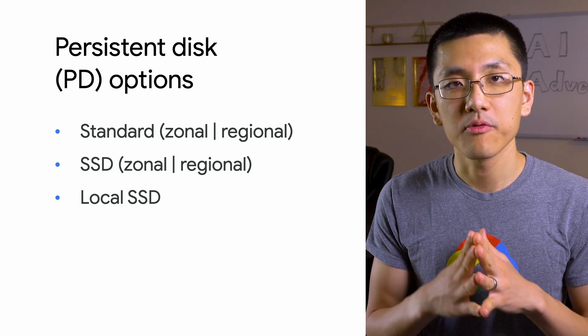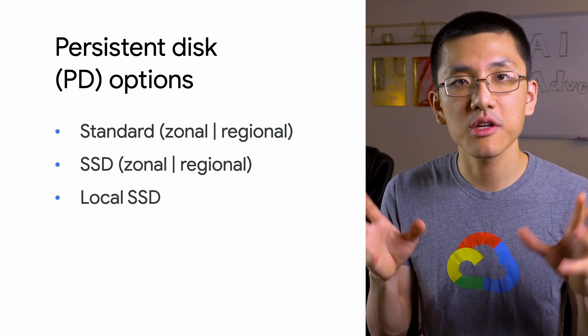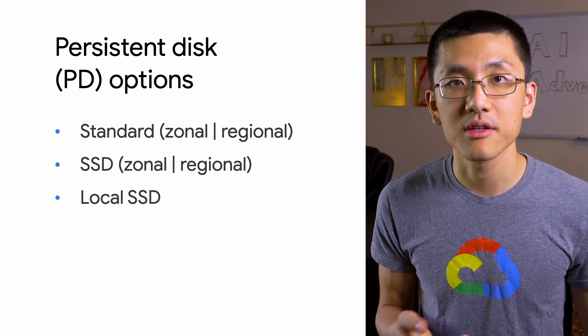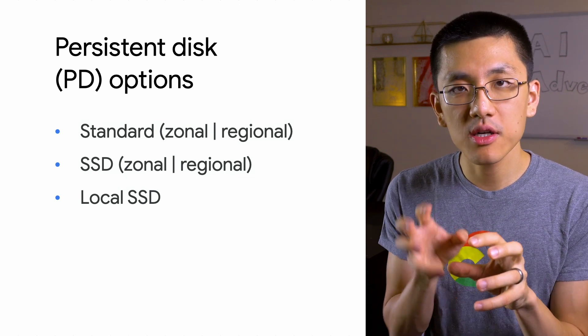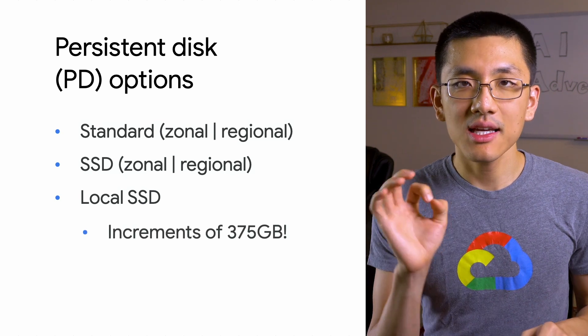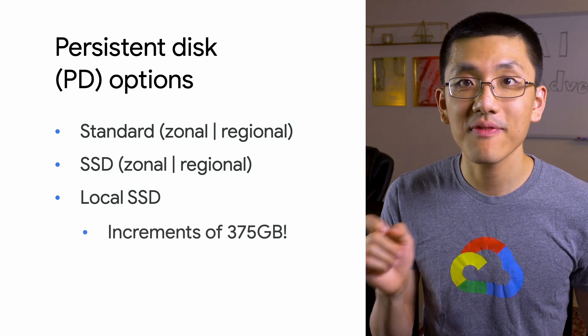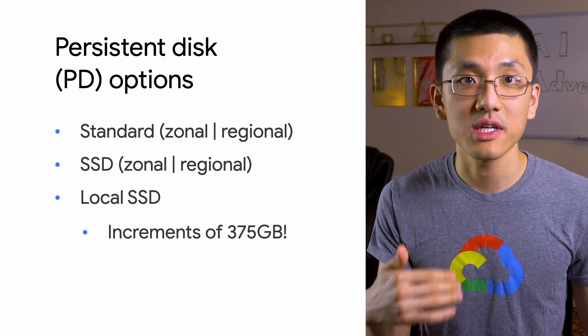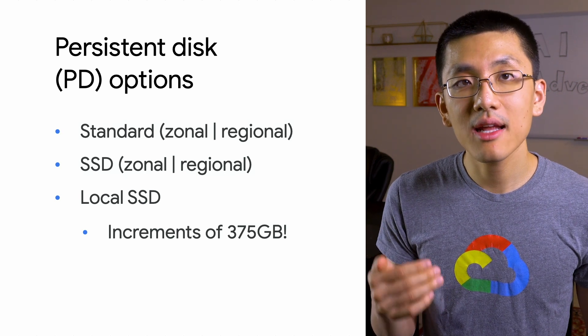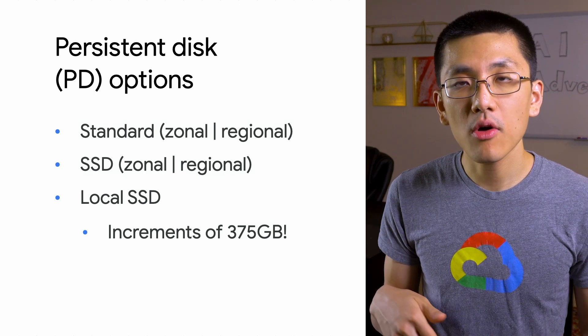Standard persistent disks are your good old spinning hard drive, and are the backbone of most data storage systems out there. SSDs up the read and write performance, but are still distributed across the data center in the same way as standard persistent disks. Local SSD is co-located with your compute resource and comes in exact increments of 375 gigabytes, so you should really only use it if you're sure you're going to need that high-performance read and write. Additionally, standard and SSD disks both offer zonal and regional options. With regional persistent disks, you can fail over to a second zone in the event that your primary zone has an outage, enabling you to have high availability services.